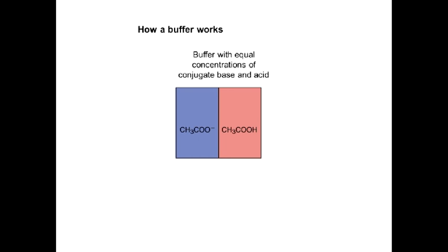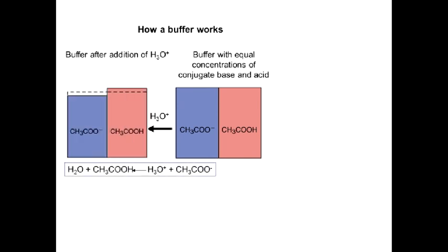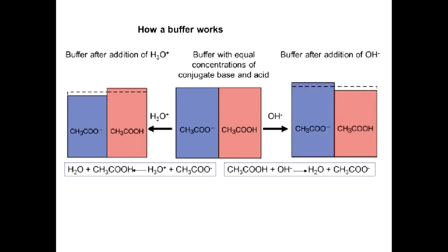Consider a buffer solution containing equal amounts of acetic acid and acetate ions. If acid is added, acetate ions react and the concentration of acetic acid increases while the concentration of acetate ions decreases. When OH⁻ ions are added, acetic acid reacts with them — the concentration of acetate ions increases and the concentration of acetic acid slightly decreases.